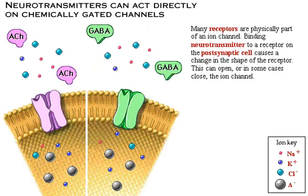Many receptors are physically part of an ion channel. Binding a neurotransmitter to a receptor on the postsynaptic cell causes a change in the shape of the receptor. This can open, or in some cases close, the ion channel. Drag acetylcholine to its receptor to see how it works.